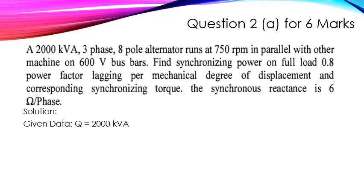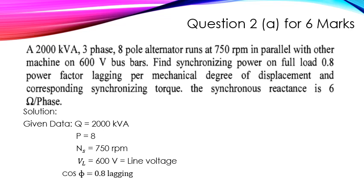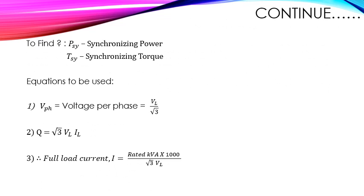Given data: kVA rating = 2000, number of poles P = 8, speed = 750 rpm, line voltage = 600 V, power factor = 0.8 lagging. We have to find the synchronizing power and synchronizing torque.